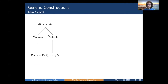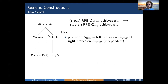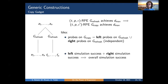For the copy gadget: the idea is to execute a refresh gadget two independent times on the same input to produce two independent fresh copies of the input sharing. We prove that if the refresh gadget is RPE with amplification order equal to D_max, then the corresponding copy gadget also achieves the maximal amplification order D_max. This is based on splitting probes on the whole copy gadget into two independent sets on the left and right refresh gadgets, where simulation success amounts to successfully simulating both sets using the underlying refresh gadget properties.